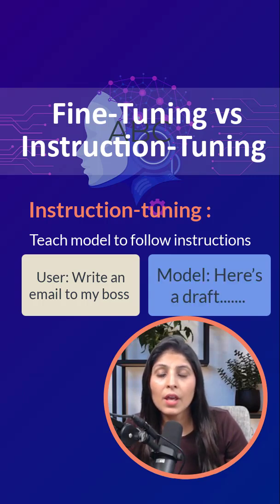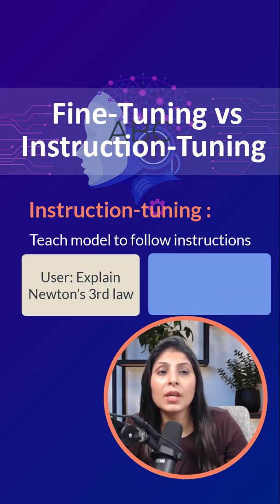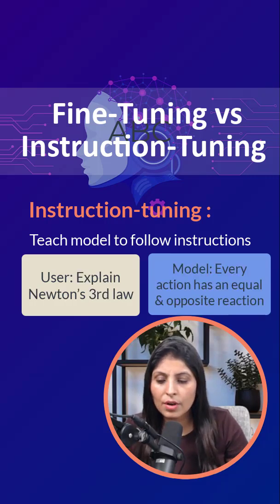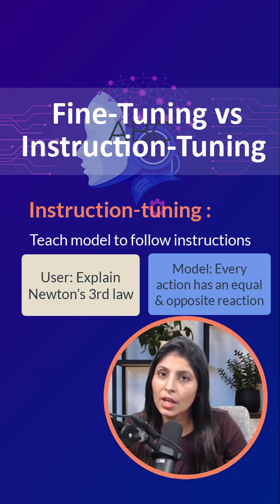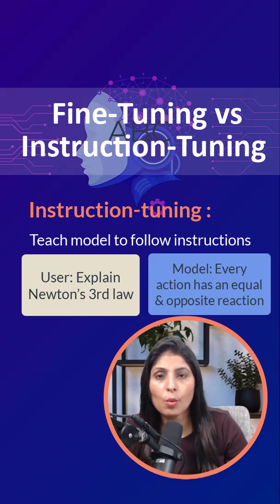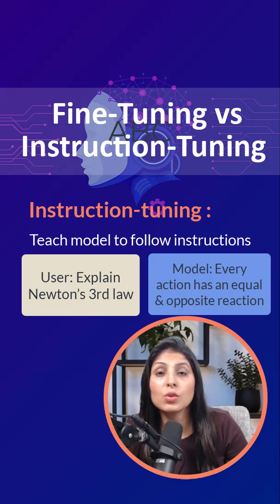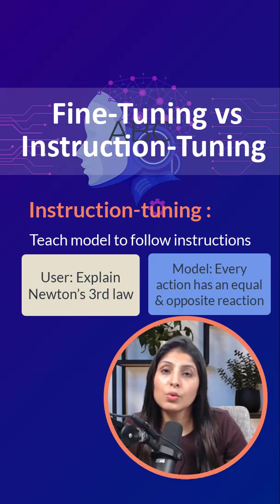'sure, here's a draft.' Or if the user says 'explain Newton's third law,' the model will say 'for every action there is an equal and opposite reaction.' These kinds of examples help the model understand how to respond naturally to the user's requests.